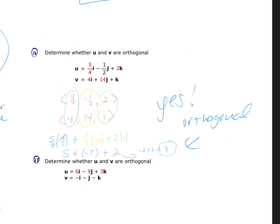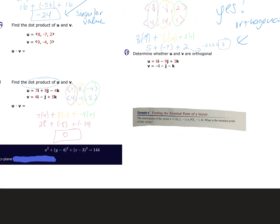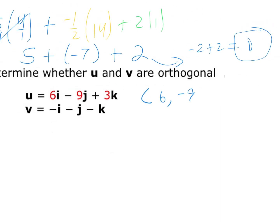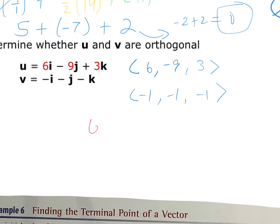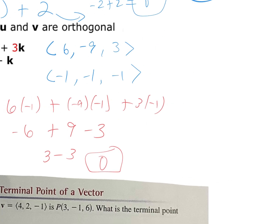Example: u = ⟨5/4, −1/2, 2⟩ and v = ⟨4, 14, 1⟩. Dot product: (5/4)×4 + (−1/2)×14 + 2×1 = 5 − 7 + 2 = 0. So yes, they are orthogonal. Also: u = ⟨6, −9, 3⟩ and v = ⟨−1, −1, −1⟩: 6×(−1) + (−9)×(−1) + 3×(−1) = −6 + 9 − 3 = 0. Orthogonal.